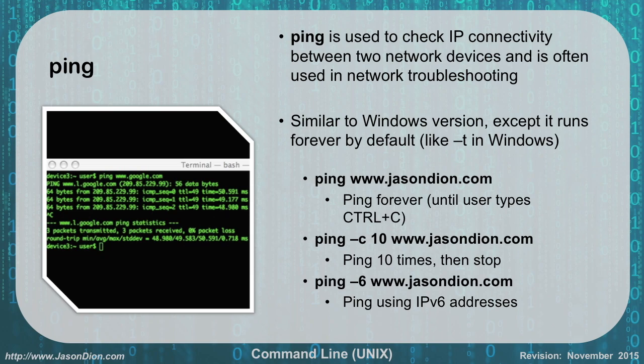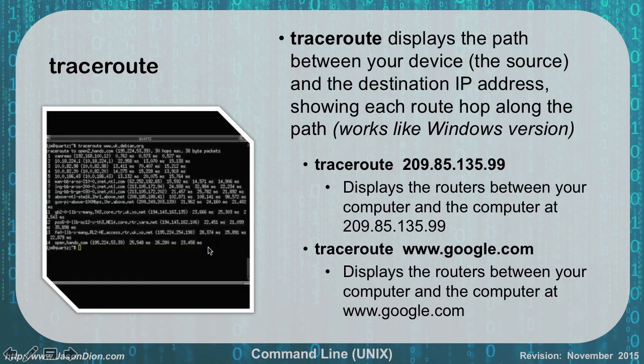Using 'ping -6' will use IPv6 routing just like before. In the example shown, we did a ping of google.com — it started running forever, so we hit Ctrl-C, which broke out of it and then summarized the statistics for us, just like Windows would.